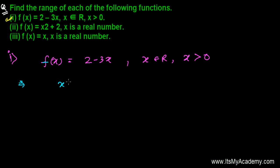We know that x is greater than 0. So if x is greater than 0, then everybody can say that 3 times x will also be greater than 0. If 3x is greater than 0, then what will be the value of 2 minus 3x?